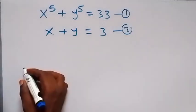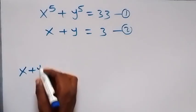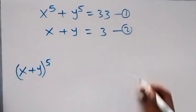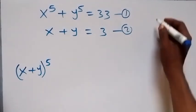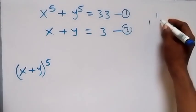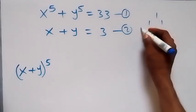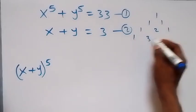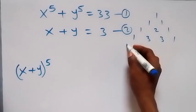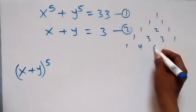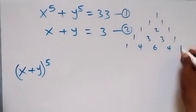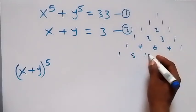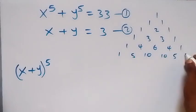From the expansion of x plus y to power 5, we can use Pascal's Triangle to know the coefficients. For power 1: 1, 1. Power 2: 1, 2, 1. Power 3: 1, 3, 3, 1. Power 4: 1, 4, 6, 4, 1. And for power 5, that will be 1, 5, 10, 10, 5, 1.